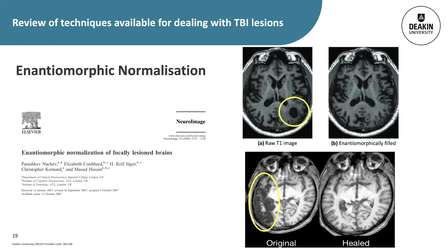Lesion filling can overcome CFM's main limitation of reduced data. It works by replacing the lesioned area with signal intensities expected at that location in healthy tissue, giving registration algorithms more data points to create a closer match to the target image. One of the most commonly utilised methods is antimorphic normalisation, which uses the subject's own contralateral hemisphere to fill in the lesioned region. However, antimorphic normalisation relies on assumptions of brain symmetry and requires a non-lesioned hemisphere, making it suitable only for unilateral lesions and not ideal for TBI populations where bilateral lesions are common.